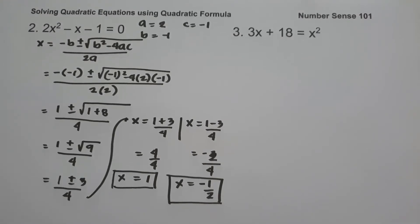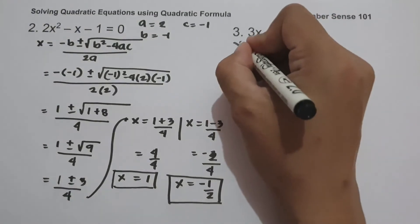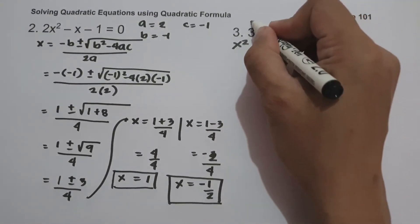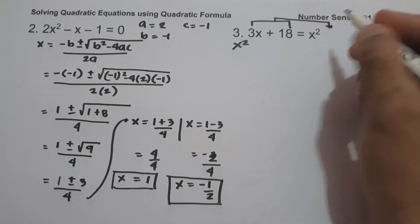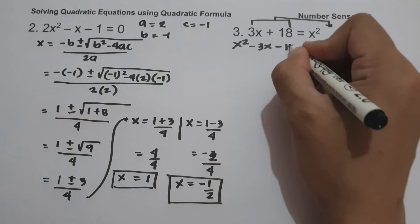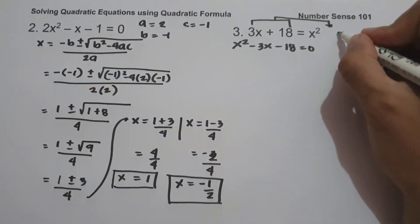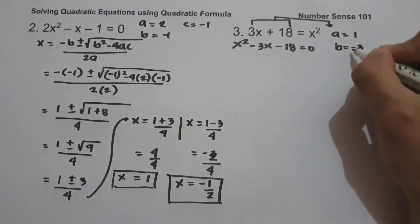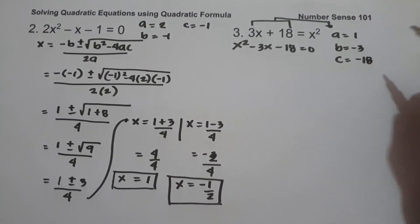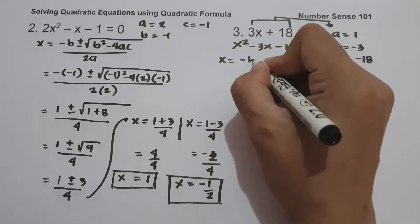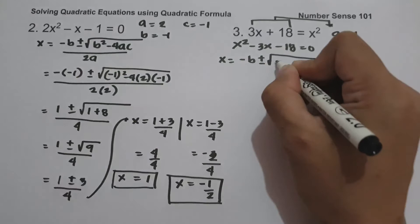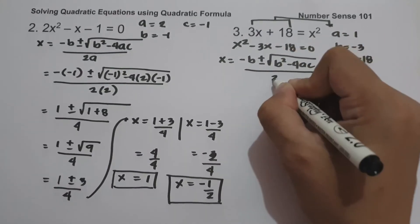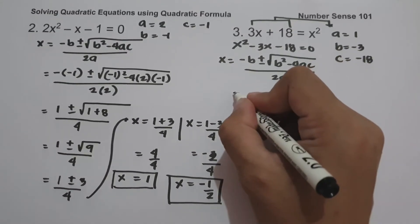On number 3, we have 3x plus 18 equals x squared. As you can see, the given equation is not written in standard form. The first thing we are going to do is to write the given equation into standard form. Let us move 3x and 18 to the other side of the equation: x squared minus 3x minus 18 equals 0. So the value of a is 1, b is negative 3, and c is negative 18. We have the quadratic formula: negative b plus or minus square root of b squared minus 4ac, all over 2a. Let us substitute the values of a, b, and c.